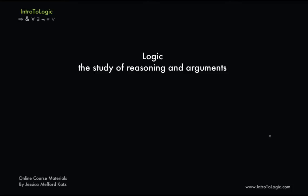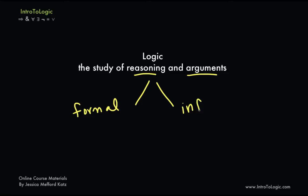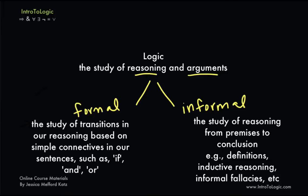Let's begin by defining logic as the study of reasoning and arguments. Furthermore, let's divide logic up into two branches. On the one hand we have formal logic, and on the other we have informal logic. We can define formal logic as the study of transitions in our reasoning based on simple connectives in the English language or in our sentences.